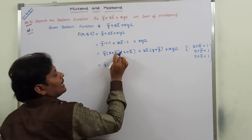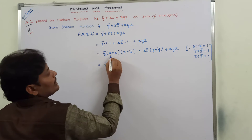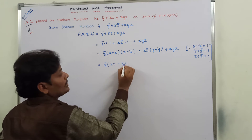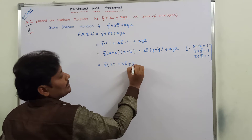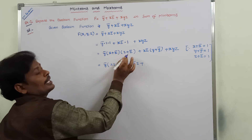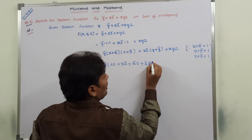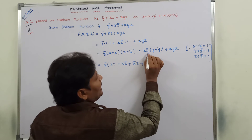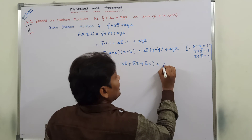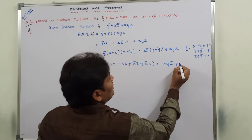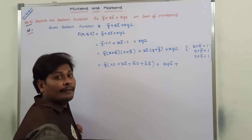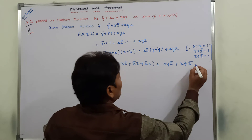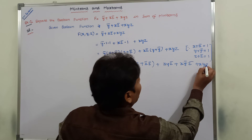Now, multiplying the terms: x is multiplied with z giving xz; x is multiplied with z̄ giving xz̄; x̄ is multiplied with z giving x̄z; and x̄ is multiplied with z̄ giving x̄z̄. For xz̄ multiplied with (y + ȳ): xz̄ multiplied with y gives xyz̄, and ȳ multiplied with xz̄ gives xȳz̄. Then we also have xyz.